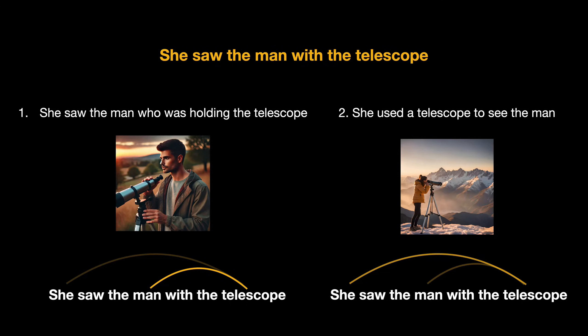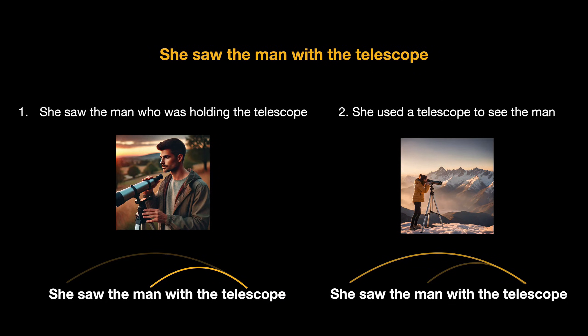If we want to generate two different interpretations of a sentence, we need to generate two different attention patterns. And if we only use one head of attention, we cannot capture both of these dependencies. A single-headed attention will not be able to capture multiple interpretations and our model might predict inaccurately. The language is so complex that a single-headed attention will be practically incapable of generating the full understanding of the sentence.